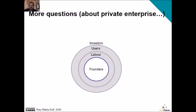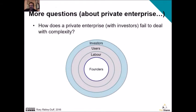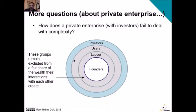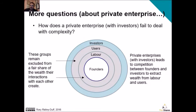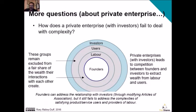Now let's look at a private enterprise that does have investors. Labour and users are still excluded from a fair share of the wealth their interactions create. But if you have investors, you'll now have competition between founders and investors to extract wealth from labour and users. Founders can address investor relationships by modifying articles of association, but it still fails to address the complexities of satisfying product and service users and providers of labour.